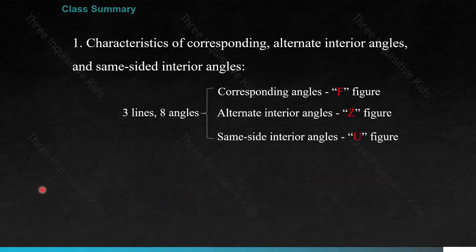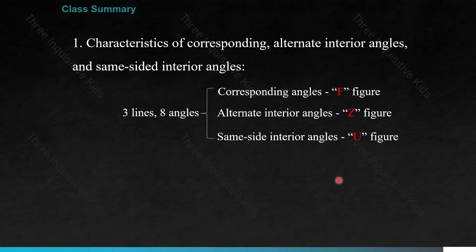Class Summary — Characteristics of Corresponding, Alternate Interior, and Same-Side Interior Angles. There's a saying in math: three lines, eight angles, because whenever three lines cross each other, eight angles are formed. From these we have three different types: corresponding angles, alternate interior angles, and same-side interior angles. Corresponding angles are found in an F-shaped figure. Alternate interior angles form a Z-shaped figure. Same-side interior angles form a U or C-shaped figure.